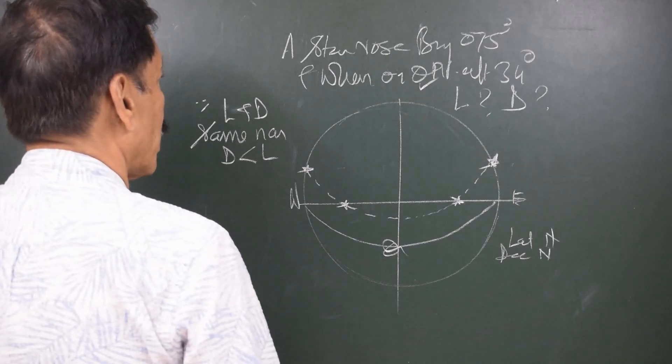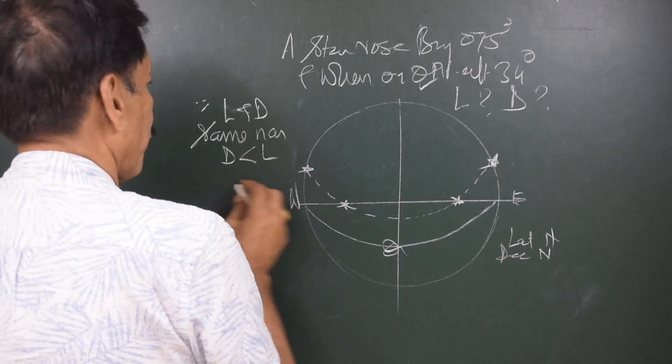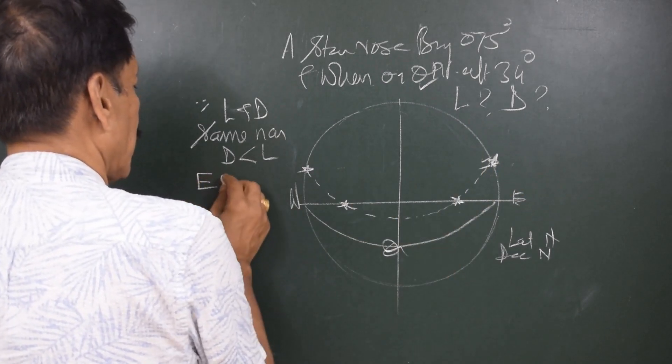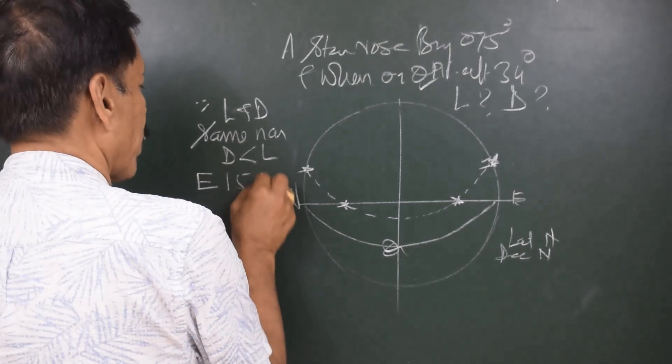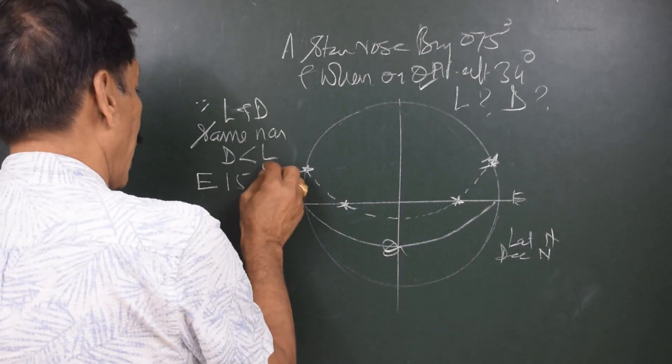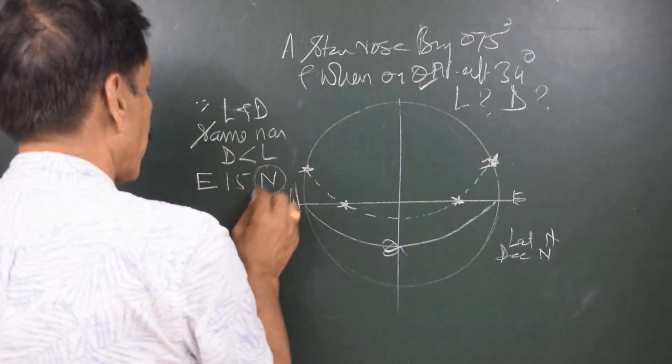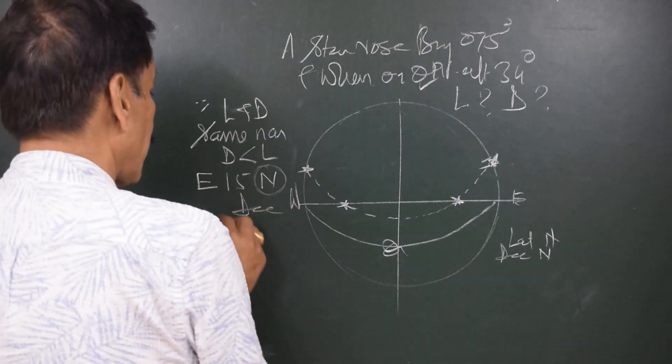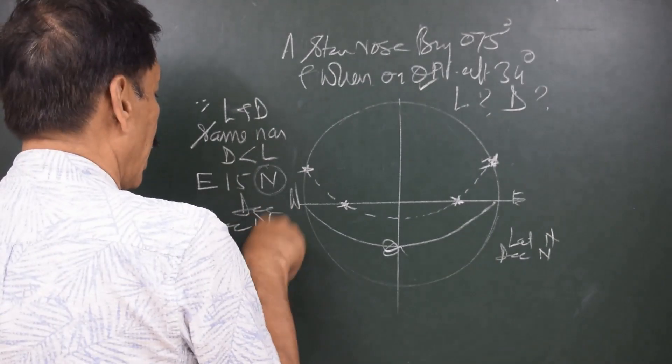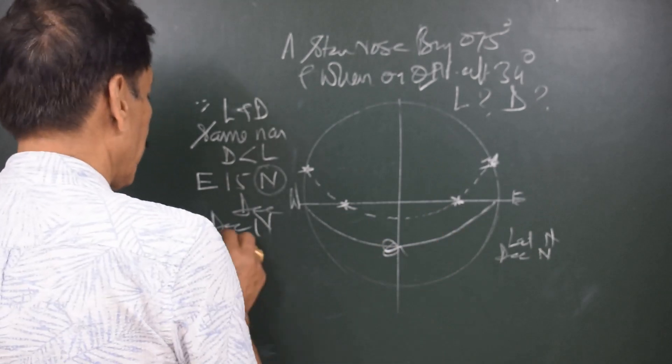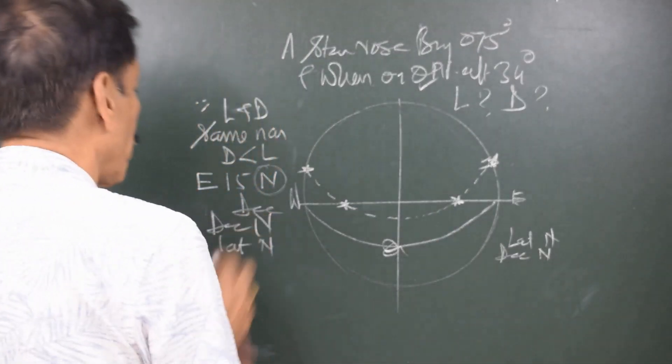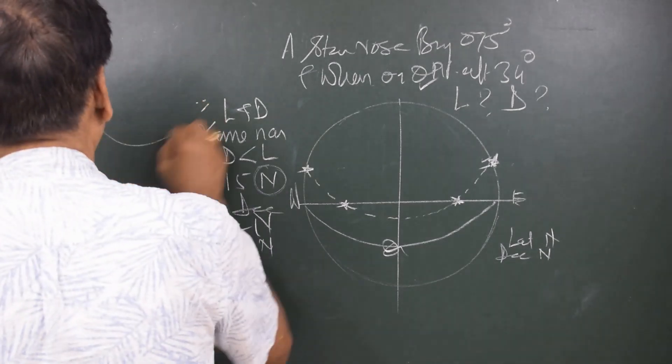And d should be less than latitude. Now, because the rising bearing is 75, I would say that the amplitude at the time of rising is east 15 north. And it is said that the amplitude takes the name from declination. It means that the declination is north and since the body is crossing observer's prime vertical, even the latitude should be north.